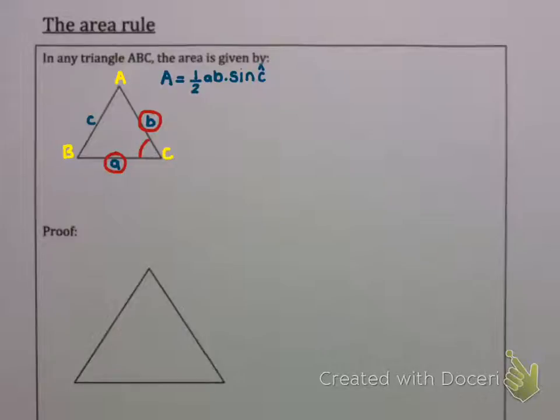Now this means that there could be three formulas for the area of this triangle. Because I could say half BC, but then I'd have to use angle A, because that's the angle between those two sides. And the third version is AC could be multiplied together, but then I must use angle B.